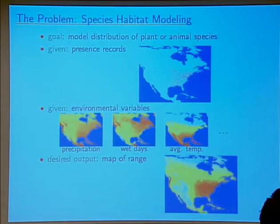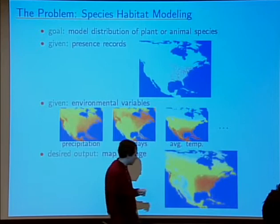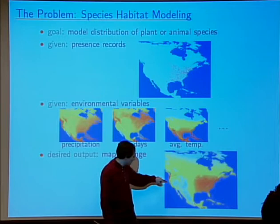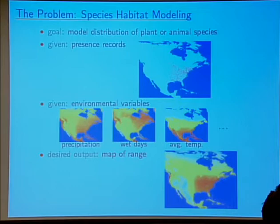The goal is to output a map that says this species — this bird — prefers these areas, tends to prefer these areas, or that these areas might also be a suitable habitat for this bird.